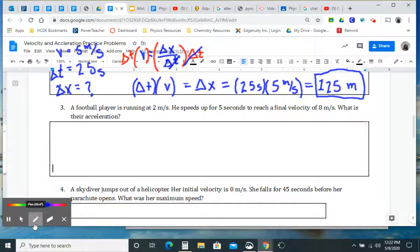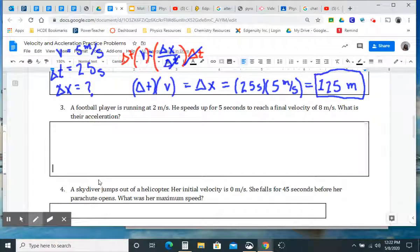All right, last one I'm going to do as an example, and then you'll do the rest on your own. We have a football player running at 2 meters per second. First thing I'm going to ask myself, what is 2 meters per second? What does that mean? So 2 meters per second is a velocity. Then it says he speeds up for 5 seconds. So we've got something about 5 seconds, some amount of time went by. So we had a change in time of 5 seconds.